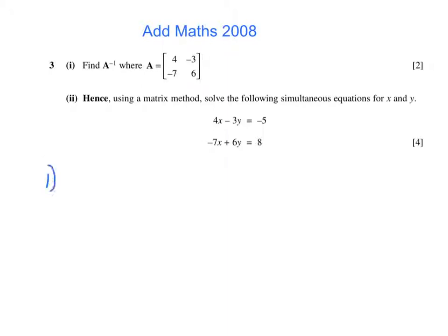To find the inverse, the first thing we need to do is find the determinant of A. So it will be 4 times 6, product of the lead diagonal, subtract the product of the other diagonal. So that's 24 take away 21, which will be 3.